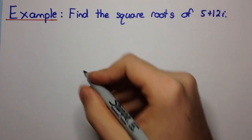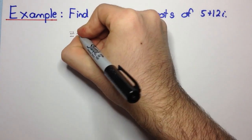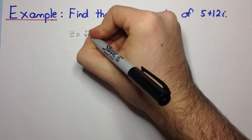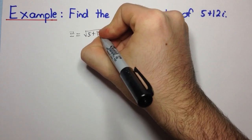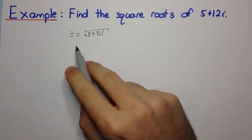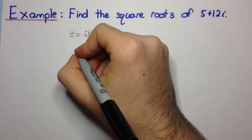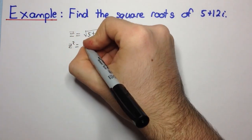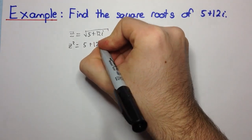So what are we actually trying to find? We're trying to find complex numbers z that are the square root of 5 plus 12i. So we can square both sides here, and we get z squared equals 5 plus 12i.